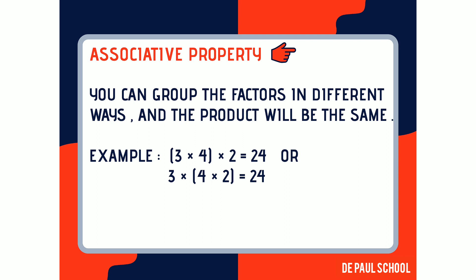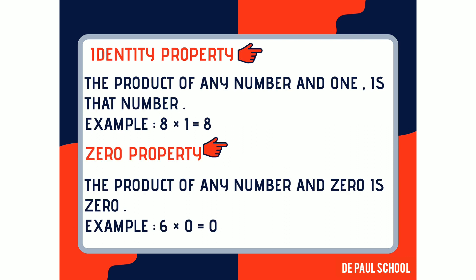The second property is associative property. When three or more numbers are multiplied, the product is the same regardless of the grouping of the factors. For example, 3 multiplied by 4 into 2 is equal to 24 — that is, 3 into 4 is 12, then 12 into 2 is 24. If we change the grouping to 3 into the result of 4 into 2, the answer is still 24.